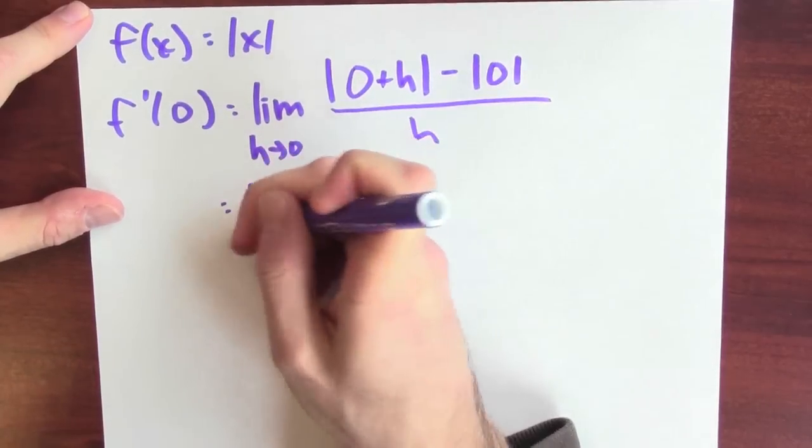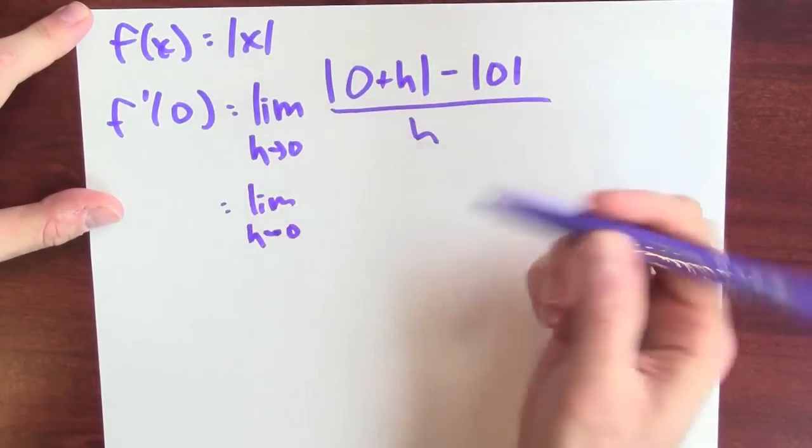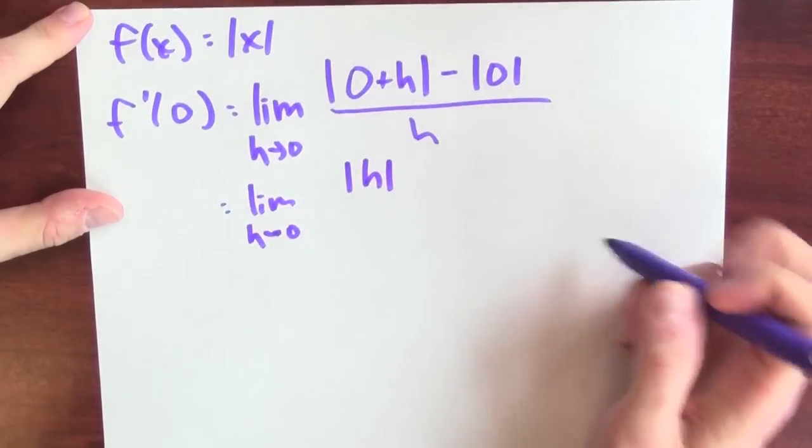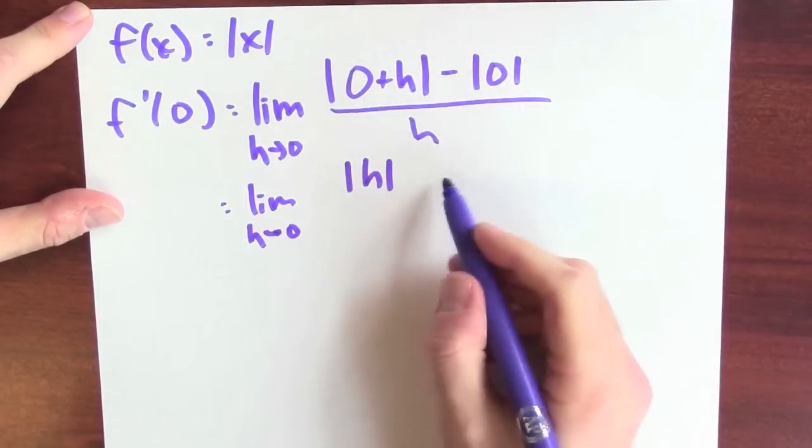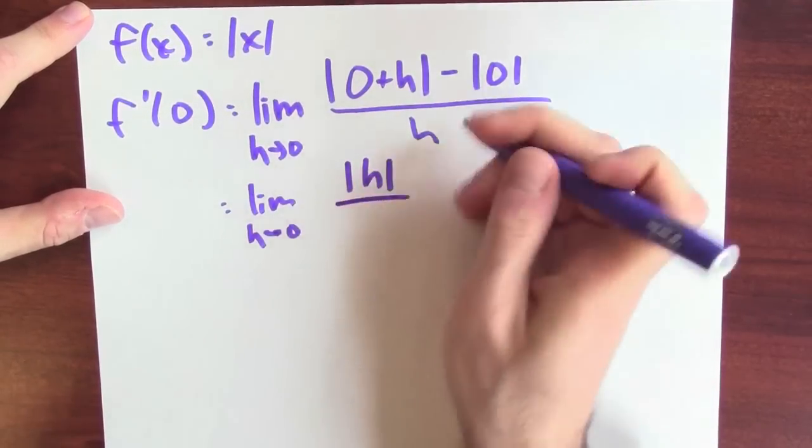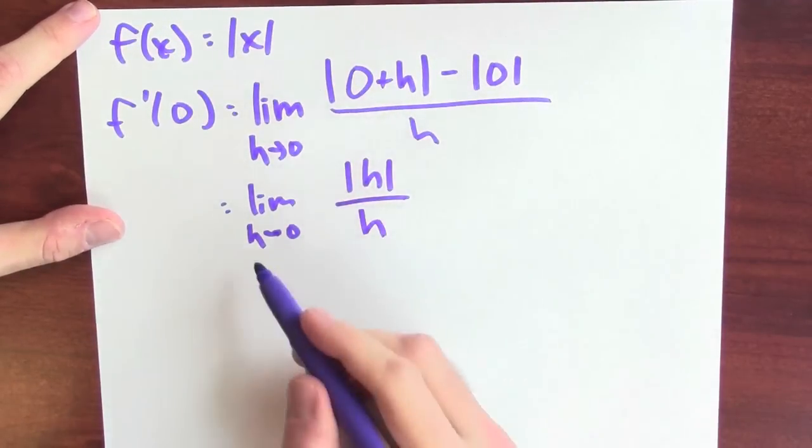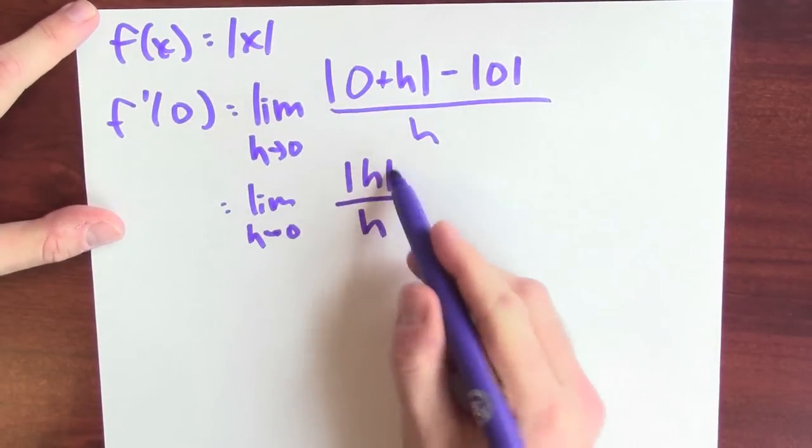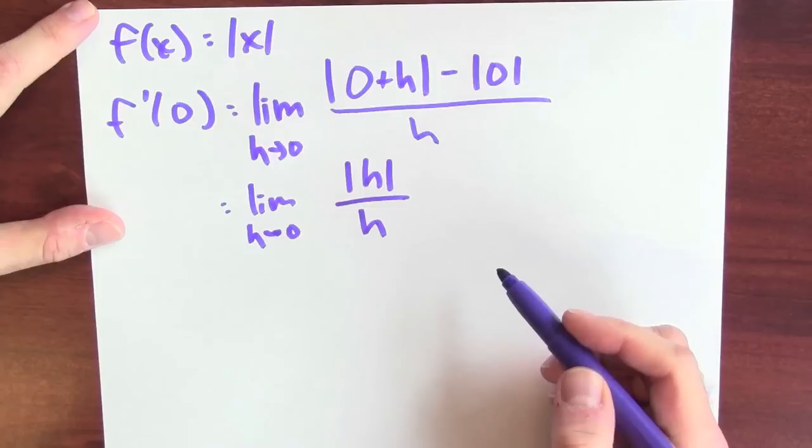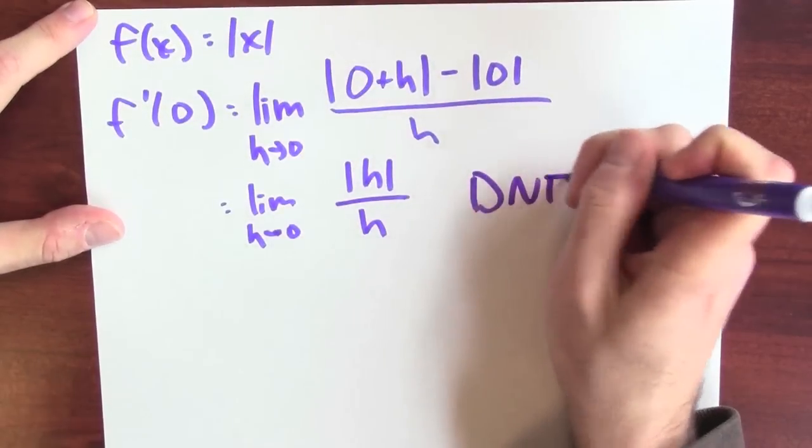Now, I can simplify that a bit. The absolute value of zero plus h is just the absolute value of h, and the absolute value is zero, so I don't even need to subtract zero, and I'm dividing by h. Now, what's the limit as h approaches zero of absolute value h over h? That limit doesn't exist.